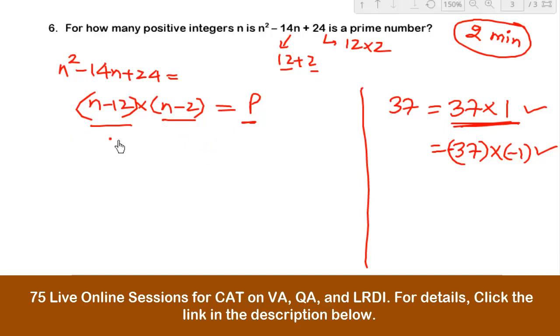So we assume that if this is 1, then this has to be the prime number. And if this is -1, then this has to be negative of a prime number. And if this is p, then this has to be 1. Or if this is -p, then this has to be -1.